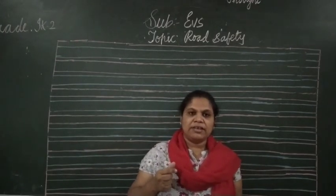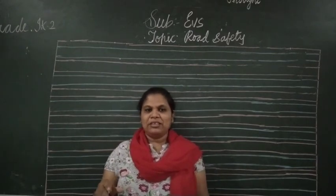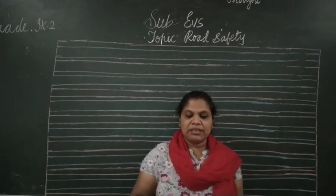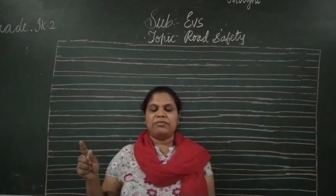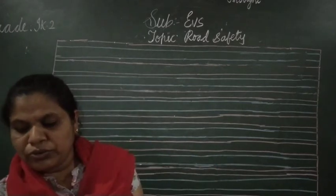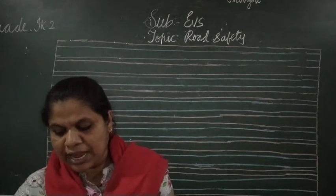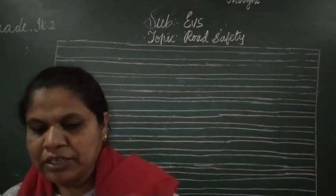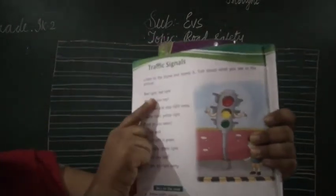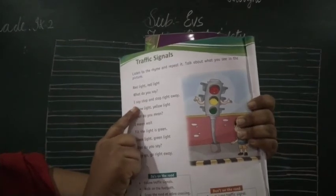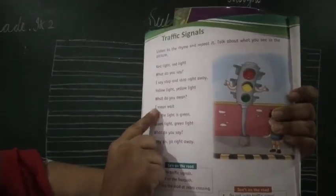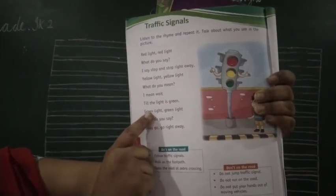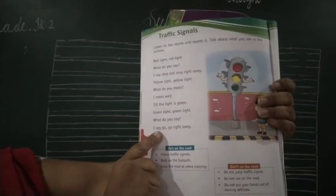What does the red color say? Red says to stop. If you see the yellow light, it says to wait. And if you see the green light, you pass - the vehicle will pass. In your textbook at page number 108, there is a rhyme: 'Red light, red light, what do you see? I say stop, stop right away. Yellow light, yellow light, what do you mean? I mean wait till the light is green. Green light, green light, what do you say? I say go, go right away.'